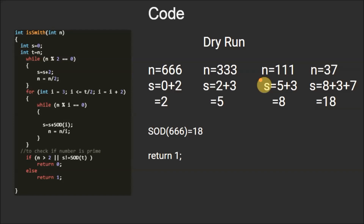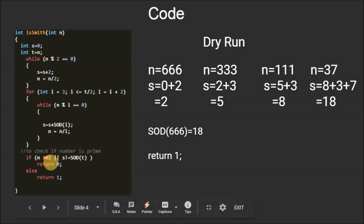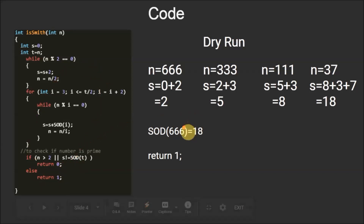The value of i increments through 5, 7, and so on until i equals 37. When i equals 37, we enter the while loop and s is updated to 8 plus the sum of digits of 37, which is 8 plus 3 plus 7, giving s equals 18. Then n becomes 37 divided by 37, which equals 1, and we exit the for loop. After the loop, n is 1, so the condition n greater than 2 is false, and s equals 18 which equals the sum of digits of t, so that condition is also false. Therefore 1 is returned, confirming that 666 is a Smith number. I hope you understood the working of this code.